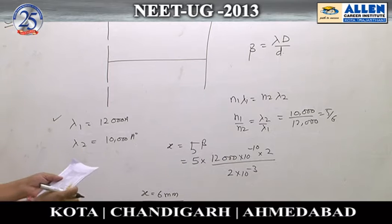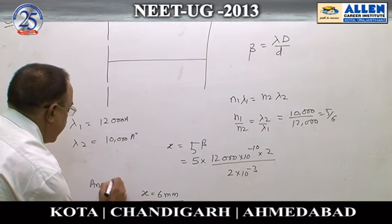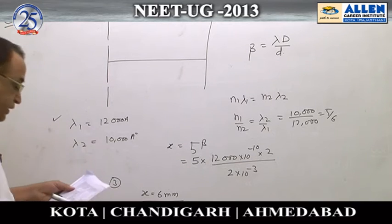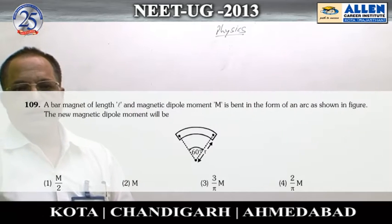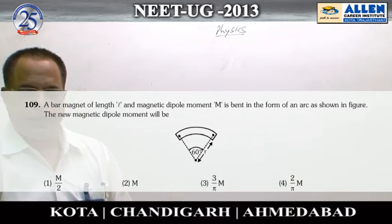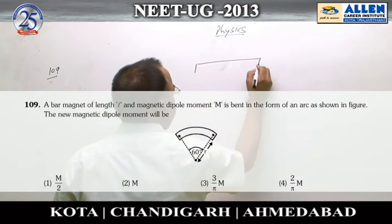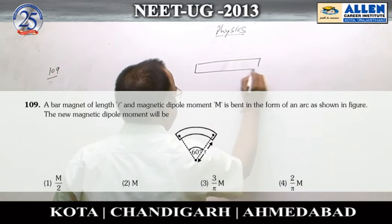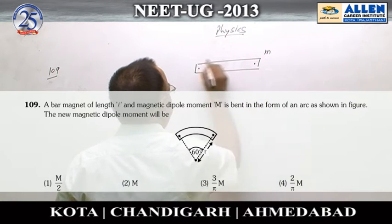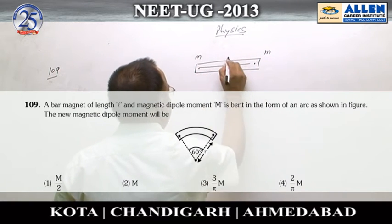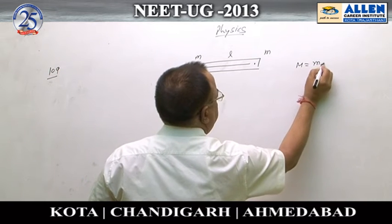Question number 109 is related to the magnetic dipole moment of a bar magnet. Here a bar magnet is given — say pole strength is small m and length of the bar magnet is l. Then its magnetic dipole moment is m into l.